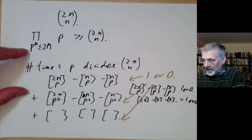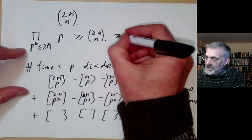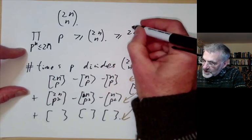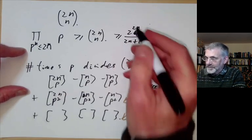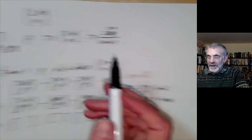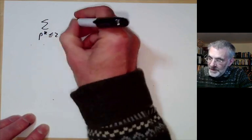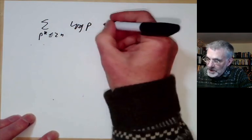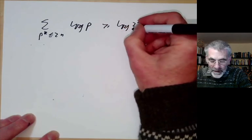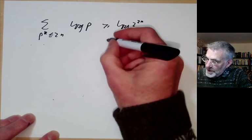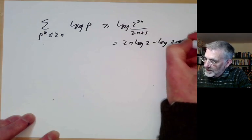We need to know what C(2n, n) is: it's at least 2^(2n) / (2n+1). Taking logarithms of both sides, the sum over prime powers p^k ≤ 2n of log p is at least log(2^(2n) / (2n+1)) = 2n · log 2 − log(2n+1).